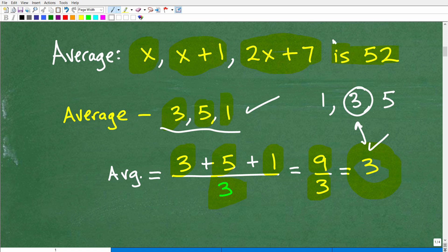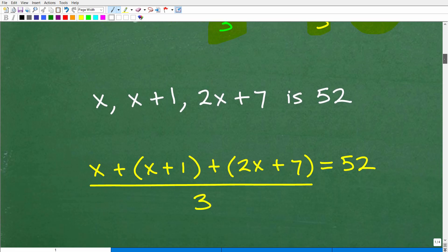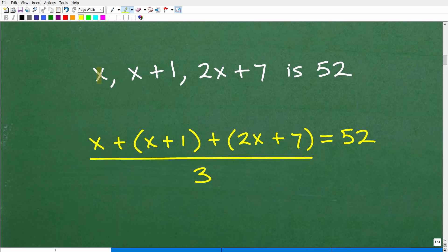And remember, this word is, in terms of translating to an algebraic expression or mathematical expression, is always equal to. So the average of these three numbers is equal to 52. So what you want to do here is set up an equation. Hopefully you can set this thing up. I'm kind of giving you some hints here because I want to give you an opportunity to take this problem in full control. But I'm going to show you exactly the equation. And, of course, we're going to solve this right now. All right. So here we go. So we have x, x plus 1, and 2x plus 7. The average is 52. So that's the problem. So what we need to do is we've got to add up these three numbers.